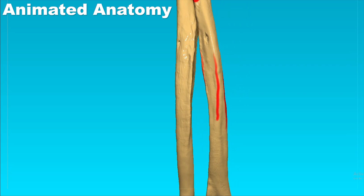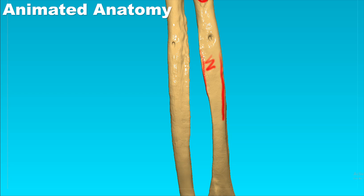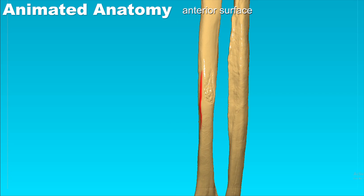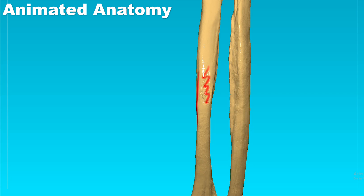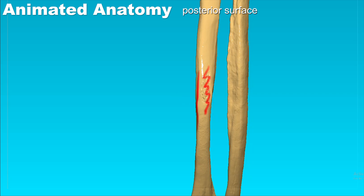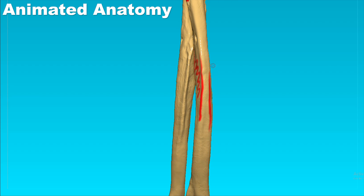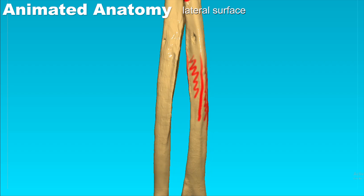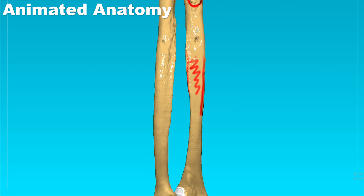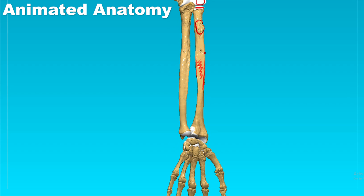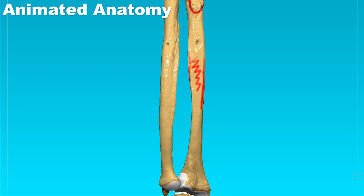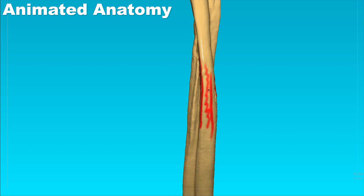We have the anterior surface and also the posterior surface. Remember, the ulna did not have a lateral surface but a medial surface. Now, because the radius is positioned laterally, this surface is the lateral surface.